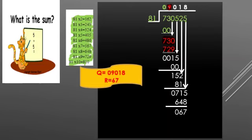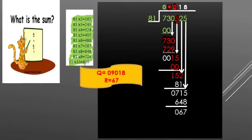Now bring down the next digit 5, making the number 15. Since 15 is smaller than 81, we write 0 in the quotient and 0 below; subtracting gives 15. Bring down the next digit 2, making the number 152. Since 81 into 2 equals 162, which exceeds 152, we cannot use 2; so we write 1 in the quotient. 81 into 1 equals 81. Subtracting: 2 minus 1 is 1; 5 is smaller than 8, so we borrow — 15 minus 8 equals 7. The remainder is 71.